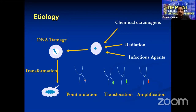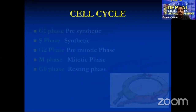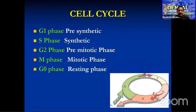What happens if there is a mutation? There is a dysregulation in the cell cycle. The cell cycle has phases: G1 phase (pre-synthetic phase), S phase (synthetic phase), pre-mitotic phase, mitotic phase, and resting phase.